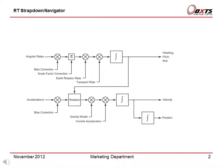The measurements of the inertial measurement unit require further processing to get to the outputs of the RT. A strapped-down navigator is used to do this. The strapped-down navigator applies the corrections from the Kalman filter to the angular rate inputs. It also corrects for the Earth's rotation and transport rate, then integrates the angular rates to give heading, pitch, and roll.